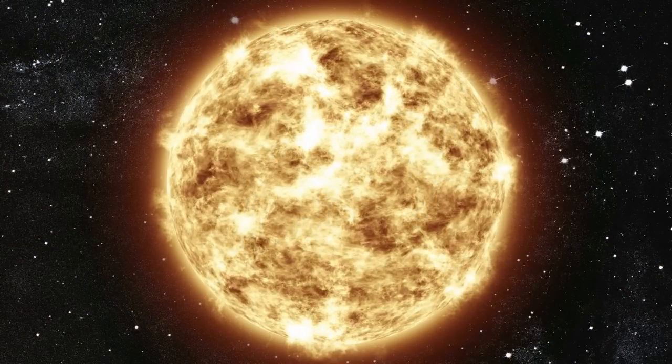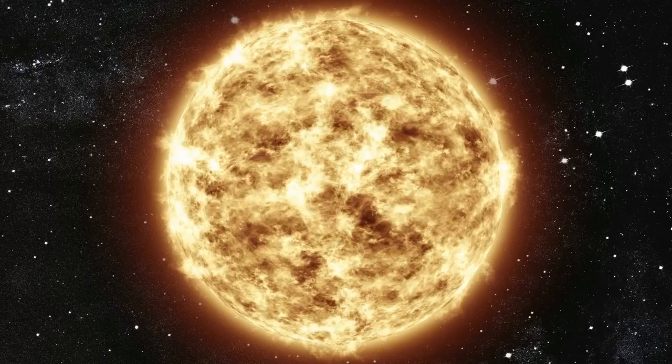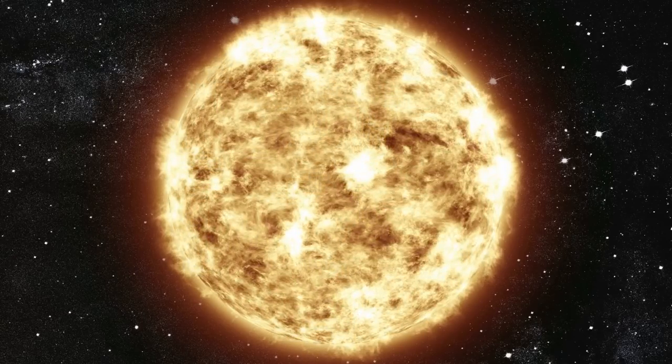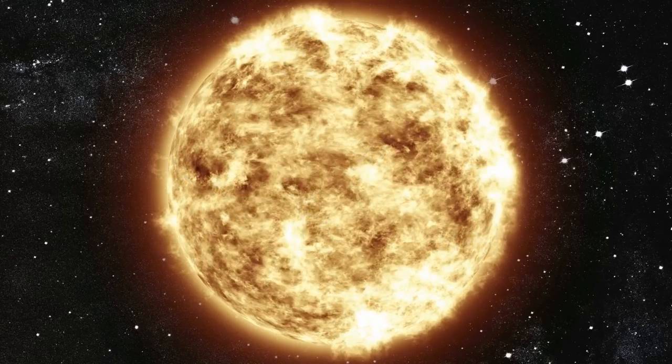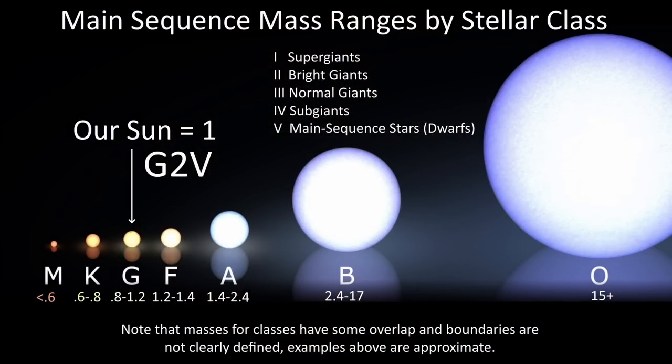Stars are even worse. Our Sun, at 4 times 10 to the 26 watts, is 2 billion times brighter than Earth, and a bit under 10 billion times dimmer than our galaxy. But our Sun is also 10,000 times brighter than the dimmest red dwarf stars are, and there are hypergiants that are a million times brighter than our Sun. That's 10 orders of magnitude or a factor of 10 billion between dimmest red dwarfs and mighty hypergiants.